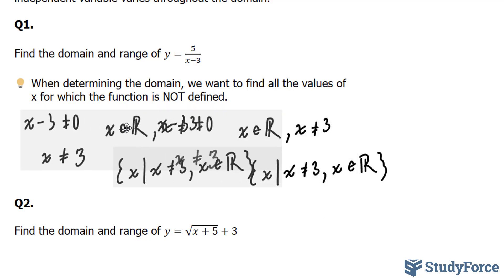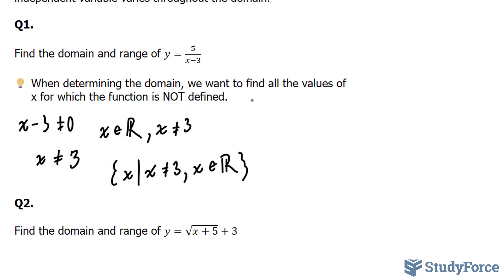Now we can move on to the range. The range requires a little bit of logic. It's not a simple, systematic way. You have to ask yourself, what can't y be? Now we know y can never equal to 0. Think about it. What value can you possibly put into x that will result into a y that is 0? Nothing. So y cannot equal to 0. And the way we write this is that y includes all real values where it cannot equal to 0.